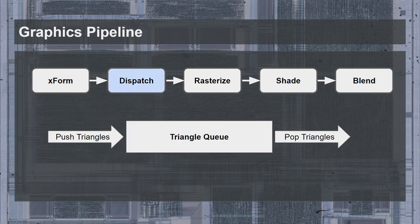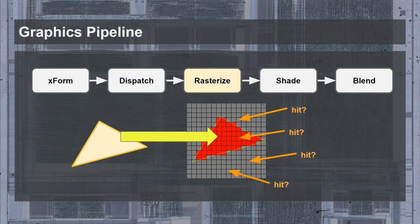The next stage is dispatch, in which the list of triangles is collected into a queue buffer and then sent to the rasterizer when it's ready for more work. This may seem somewhat trivial, but it's necessary to keep the rest of the graphics pipeline busy. Next we have the rasterize stage, which takes the mathematical form of a triangle and finds out which pixels on the screen — or more specifically, in the frame buffer — should be filled. This can be thought of as a series of hit tests, where pixels are checked to see if they are within the triangle shape.